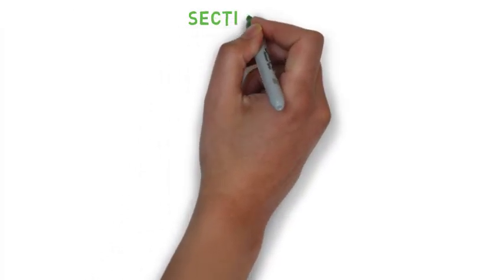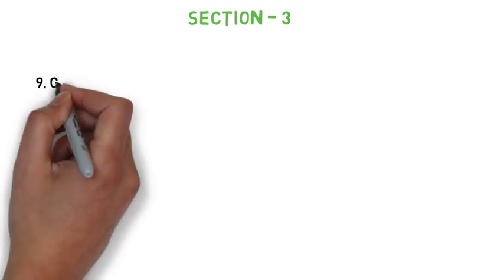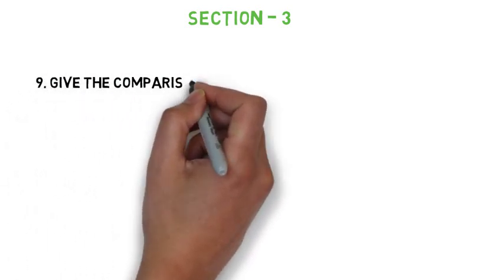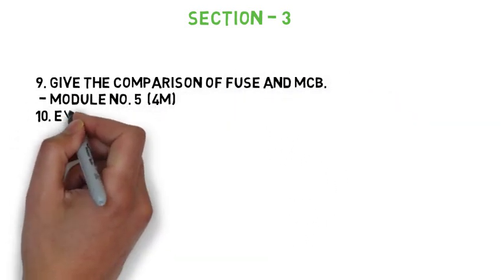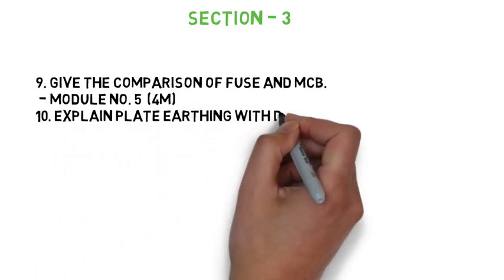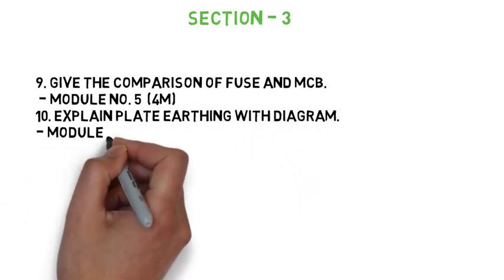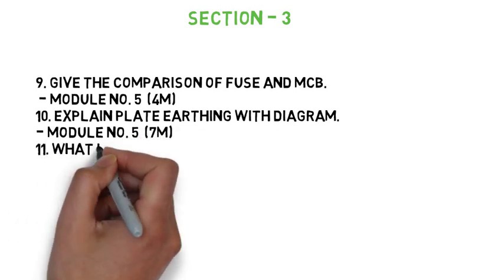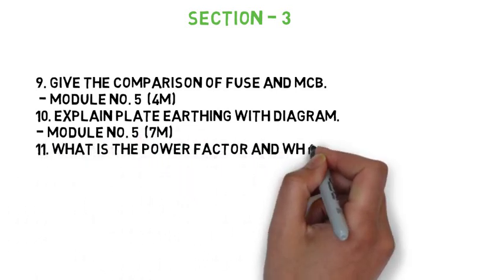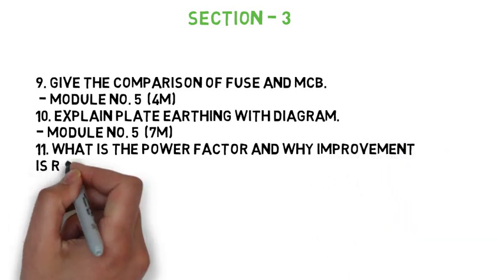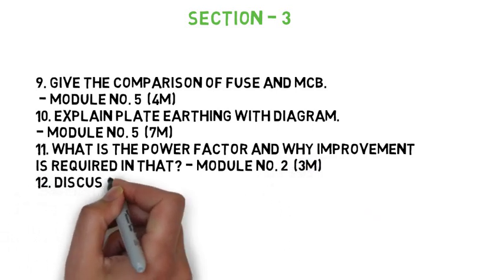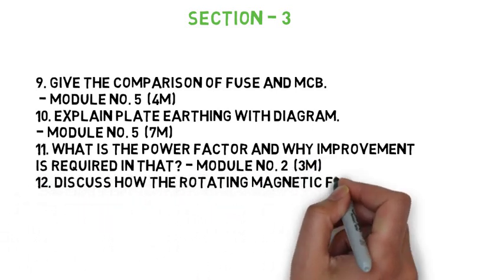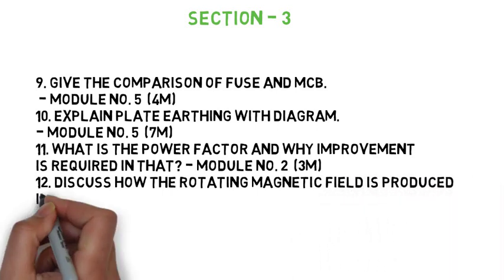Now moving to Section 3, which has 4 important questions. The ninth question: Give the comparison of Fuse and MCBs — 4 marks. The tenth question: Explain plate earthing with diagram — 7 marks. The eleventh question: What is power factor and why is improvement required — 3 marks. The twelfth question: Discuss how rotating magnetic field is produced in a three-phase induction motor — 4 marks.